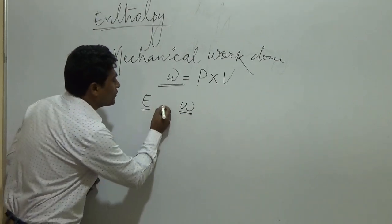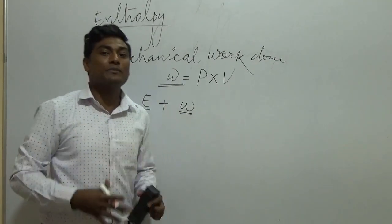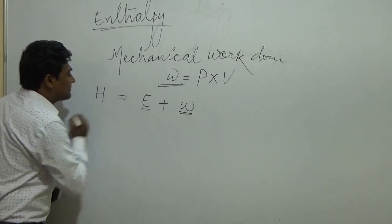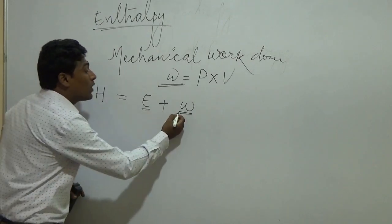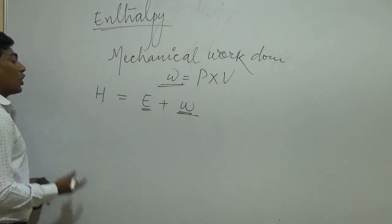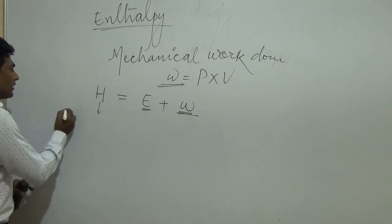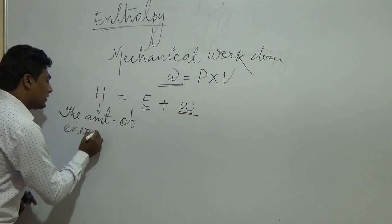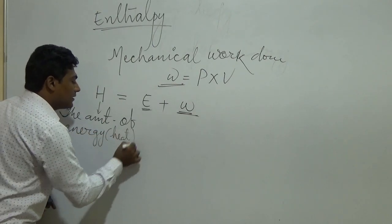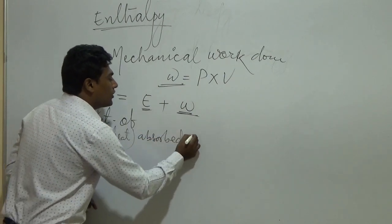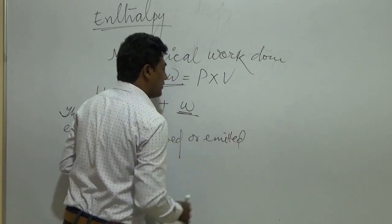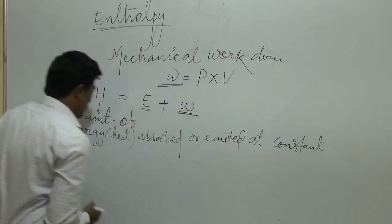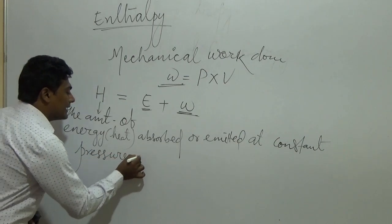This internal energy and the amount of work done decides how much heat will be absorbed by the system. This is the heat that is observed according to what amount of work is done and what is the internal energy already stored inside your body. The amount of energy, or heat absorbed or emitted at constant pressure, is called enthalpy.